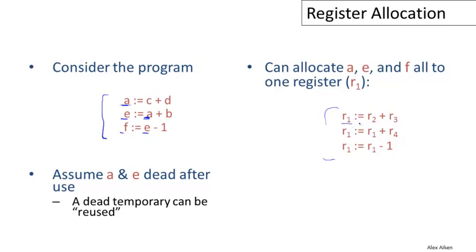Then the code would look like this: R1 would be R2 plus R3, then R1 would be R1 plus R4, and R1 would be R1 minus one. Notice how this is just a transliteration of the code into registers, but there is a many-to-one mapping of names on the left to register names on the right.